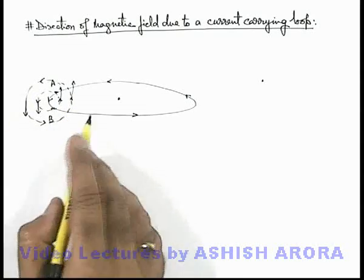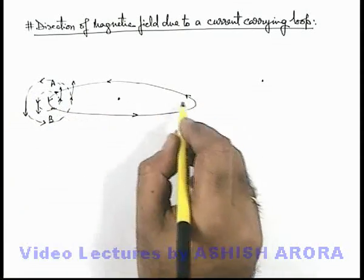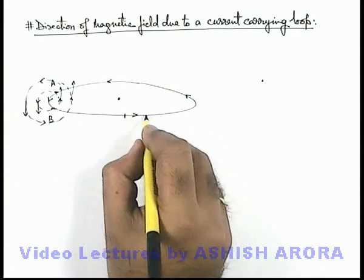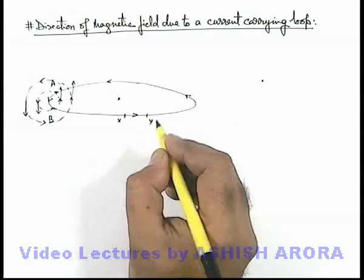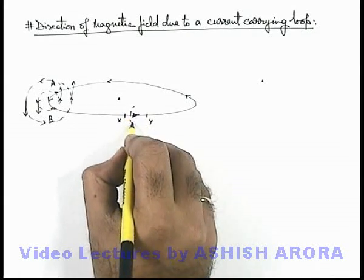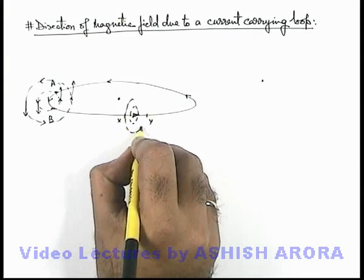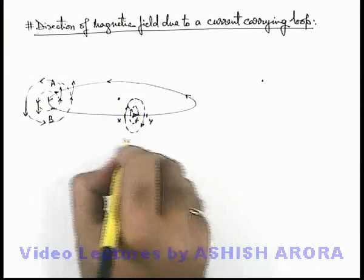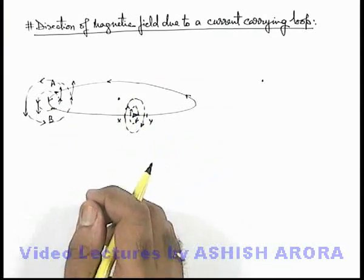And similar magnetic lines we can draw in surrounding of this loop at any point, like if we consider an element on the current carrying coil X-Y, then again here also magnetic lines will exist in this manner. And here magnetic lines will be flowing like this according to right hand thumb rule.